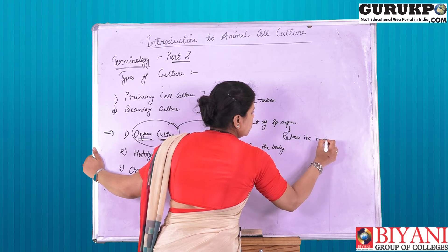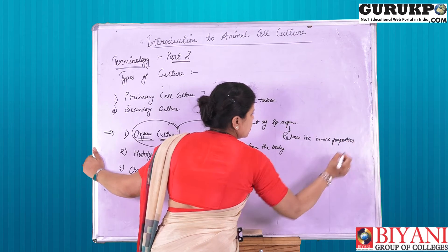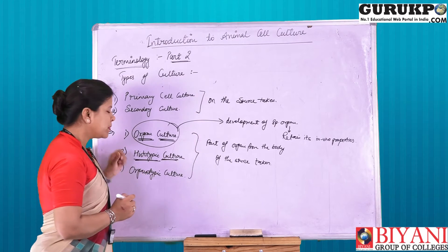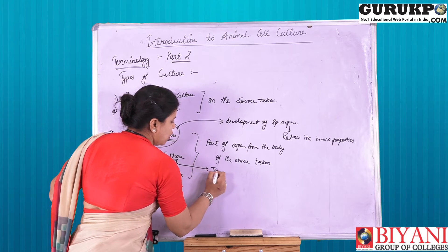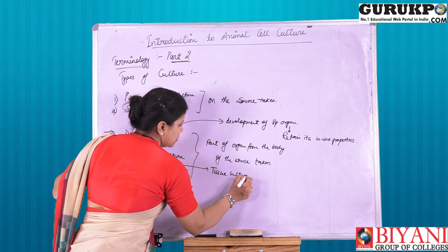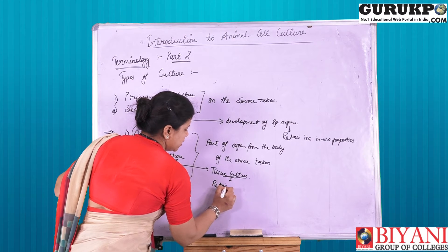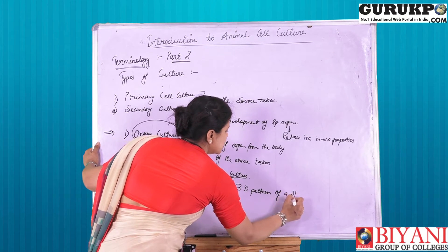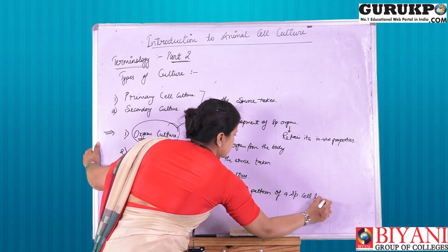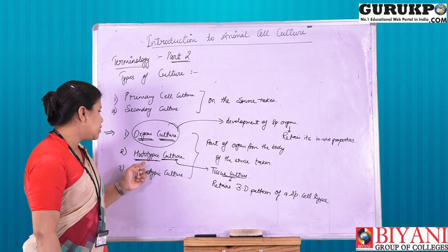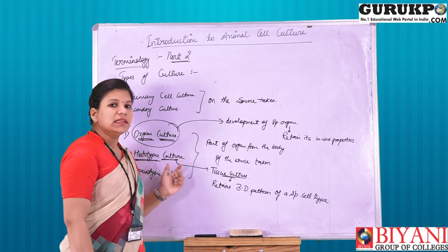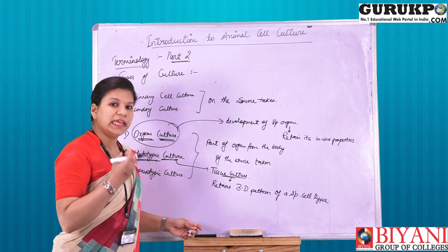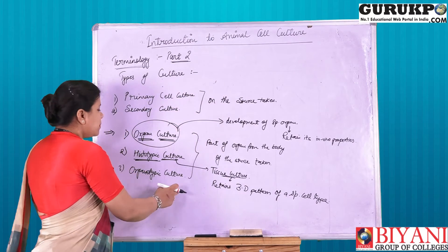So organ culture here means development of any specific organ formation which has the ability to retain its in vivo properties. Next comes histotypic culture. As the name suggests, 'histo' means tissue. So here we have the formation of tissue culture which retains the three-dimensional pattern of a specific cell type.